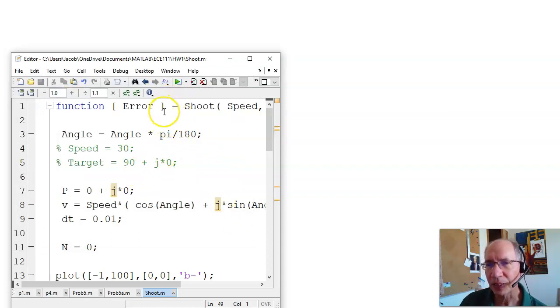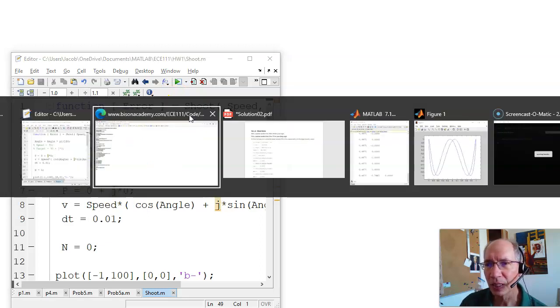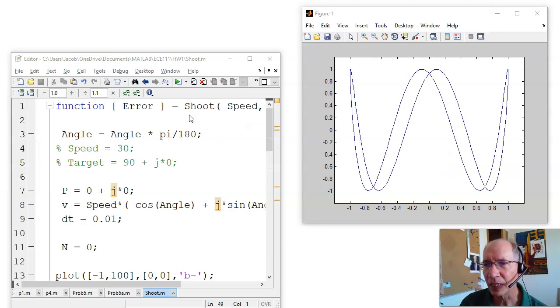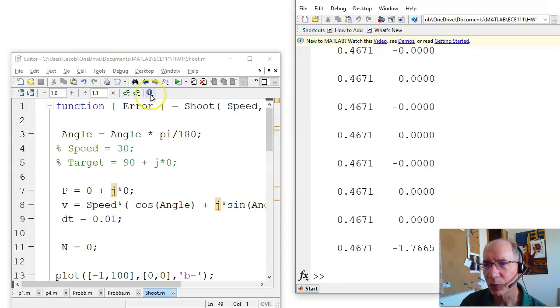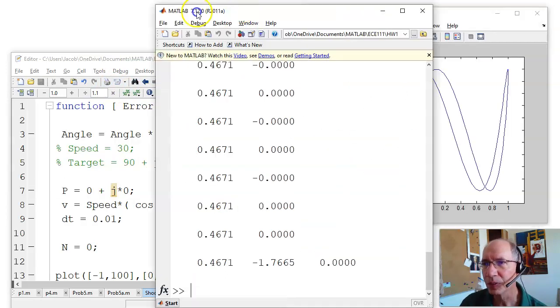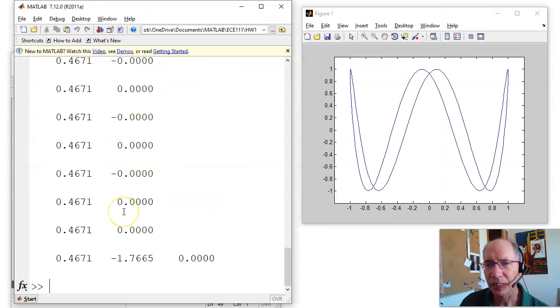I can now call that. I can't run this directly. This is a subroutine. Subroutines you don't run. Subroutines you call. In the main routine, I can now call it. So over here, this is the command window. I can now do something like shoot(40, 50, 60).